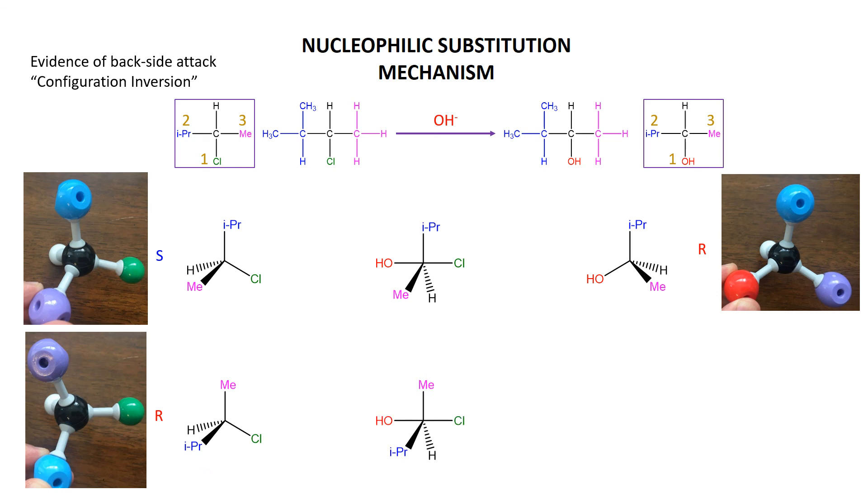Now let's see what happens if we start off R. Again goes through that five-coordinate intermediate - horribly drawn, but you can see methyl at the top, isopropyl and the hydrogen here sort of moving in this direction as the OH comes in, as the chlorine leaves.